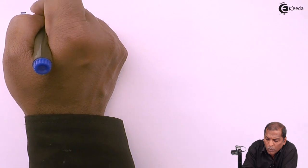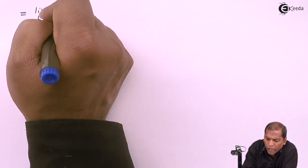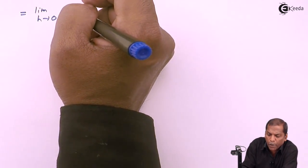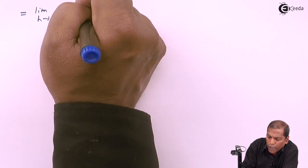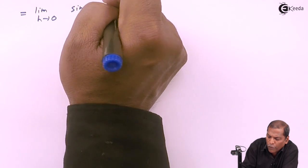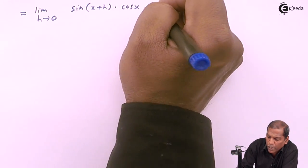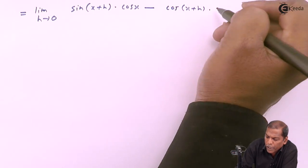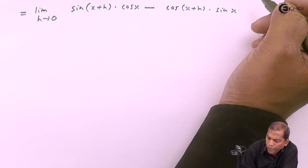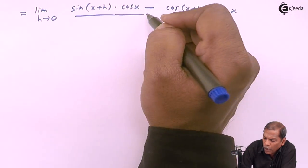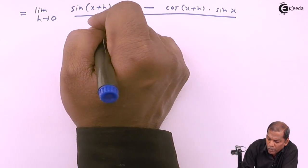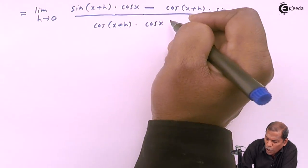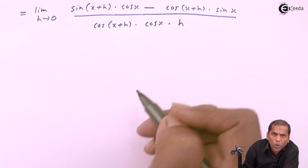So that equals limit h tends to zero. In the numerator we go for cross multiplication. On cross multiplying we get sin(x + h) into cos(x) minus cos(x + h) into sin(x), and then the whole thing divided by cos(x + h) into cos(x), and then into h.